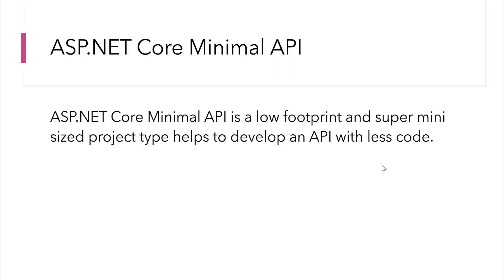ASP.NET Core's minimal API is a low footprint and super mini sized project type that helps you develop an API with less code. This is an amazing feature of ASP.NET Core itself. You will quickly understand if I talk about it with a quick comparison — usual ASP.NET Core Web API project versus the ASP.NET Core minimal API project.